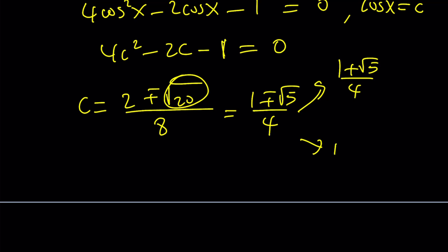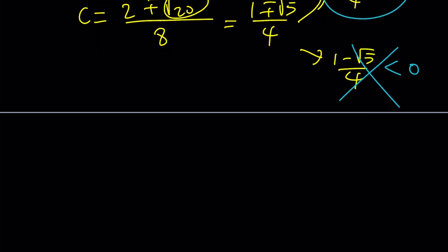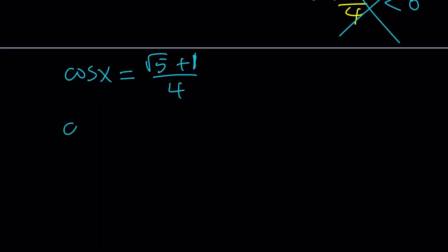This gives us two c values: (1 + √5) / 4 and (1 - √5) / 4. But (1 - √5) / 4 is negative, and cosine of 36 cannot be negative—it's in the first quadrant. So we're going to go with (1 + √5) / 4. In other words, cosine x, which is c, is (√5 + 1) / 4. Since x is 36, this will be cosine of 36 degrees.